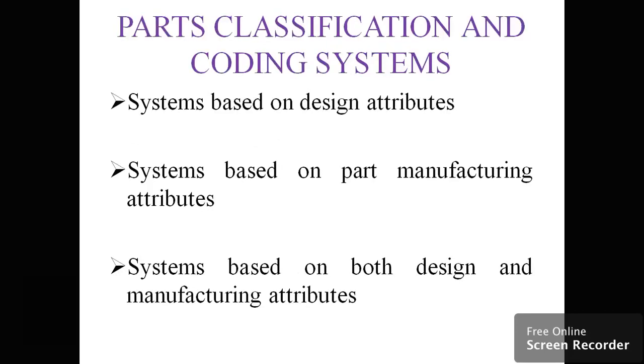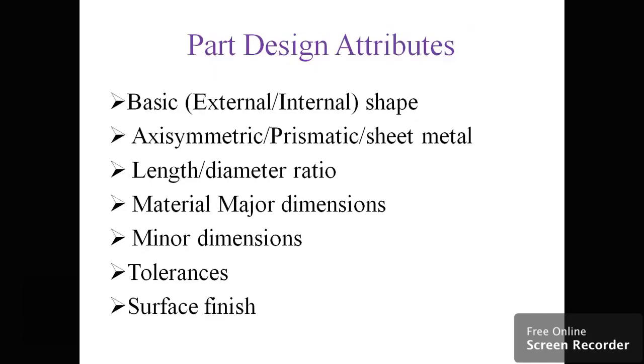Part classification and coding systems have three categories: systems based on design attributes, systems based on manufacturing attributes, and systems based on both design and manufacturing attributes.